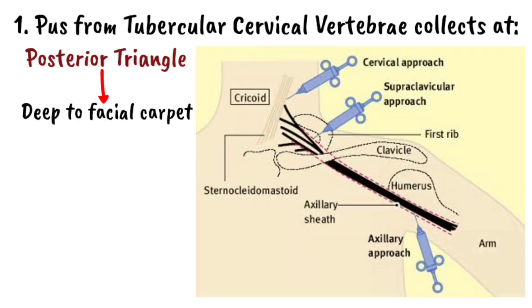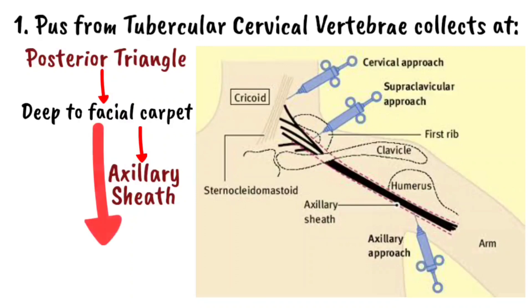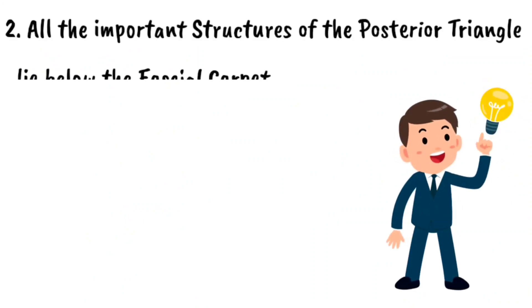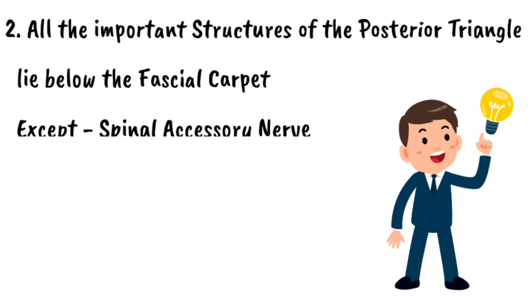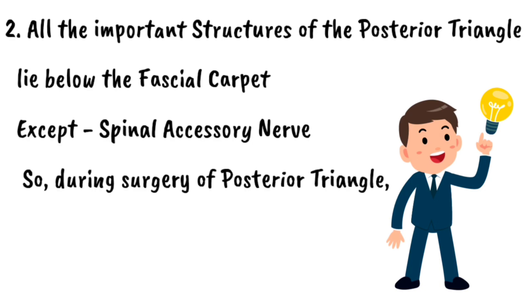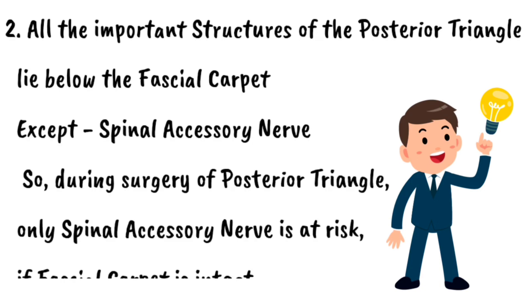Regarding clinical correlations: the fascial carpet extends down to form the axillary sheath. Therefore, if there is pus in the posterior triangle, it can track downwards and laterally along the axillary sheath into the axilla or into the arm. Second, all the important contents lie deep to the fascial carpet of the floor except the spinal accessory nerve. So during surgery of the posterior triangle, all structures except the spinal accessory nerve are safe as long as the fascial carpet is intact.